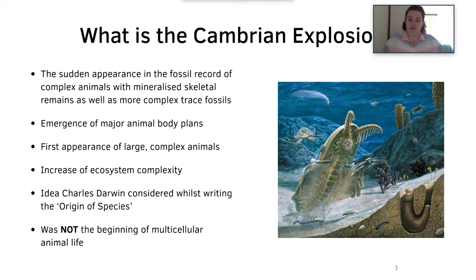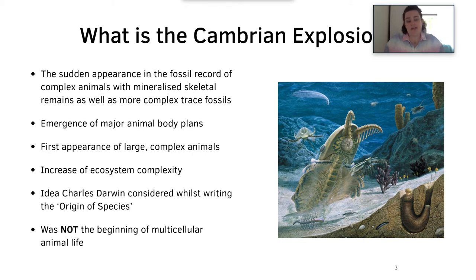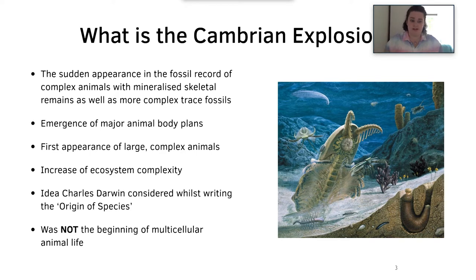So what is the Cambrian explosion? It is the sudden appearance in the fossil record of complex animals with mineralised skeletal remains, as well as the emergence of more complex trace fossils. It's also the emergence of major animal body plans which we still see today, and the first appearance of large complex animals, as you can see in the image to your right. There's also an increase in ecosystem complexity. It's an idea that Charles Darwin considered when writing The Origin of Species, however he wasn't alive to see when the first fossils from that time period came out. He was the one who suggested that there probably was something back then but we just weren't able to find any rocks of that age yet.